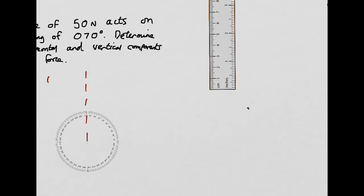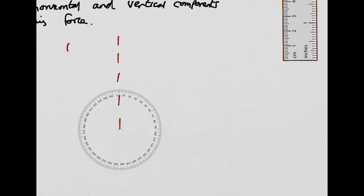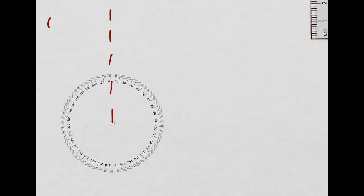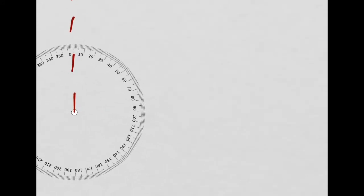I'm going to measure the direction first. I'm going to measure 070 clockwise from north. So 070 is there. So there's my 070 bearing.